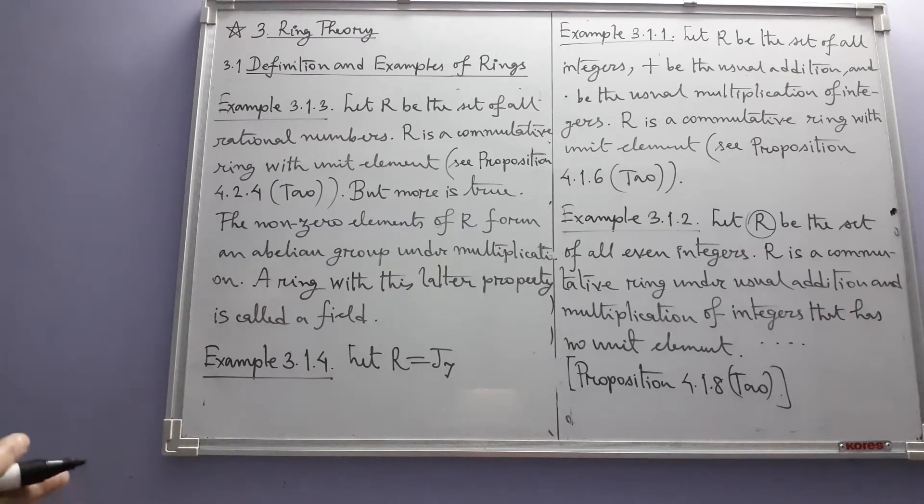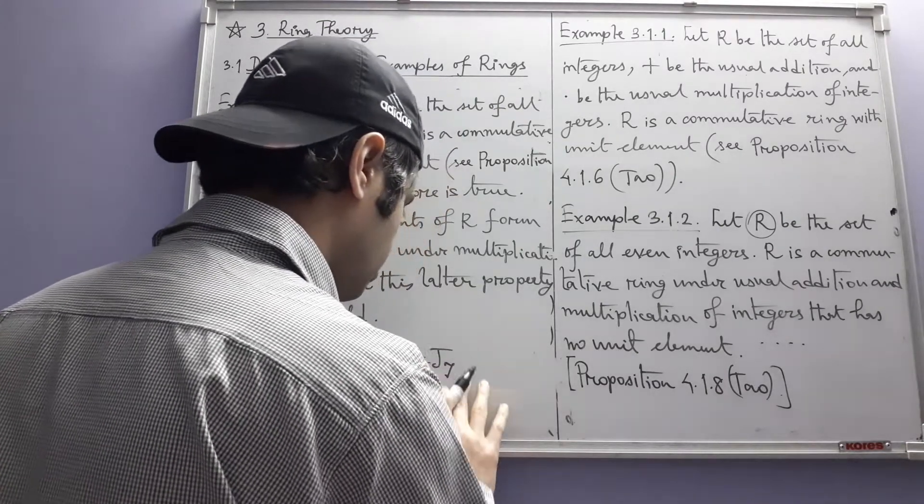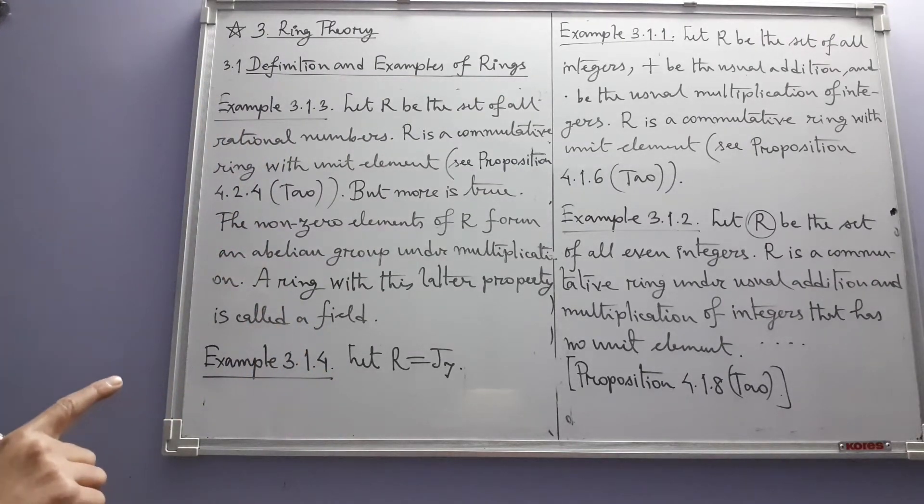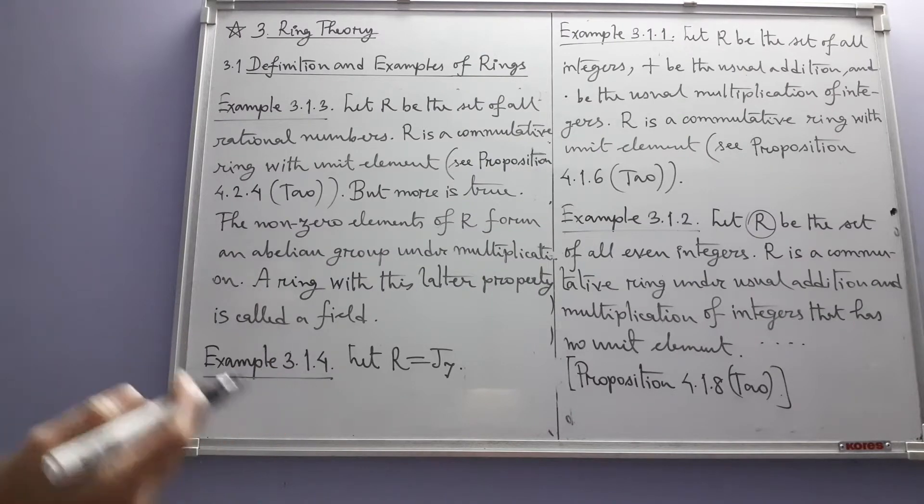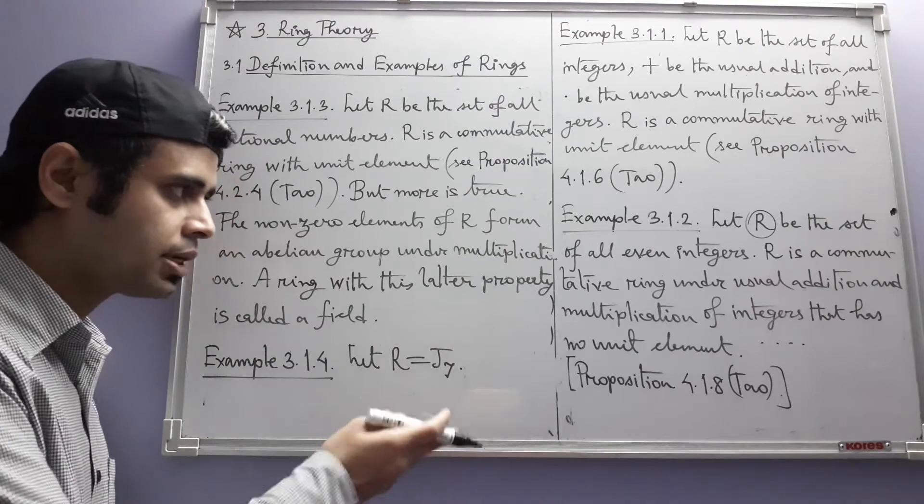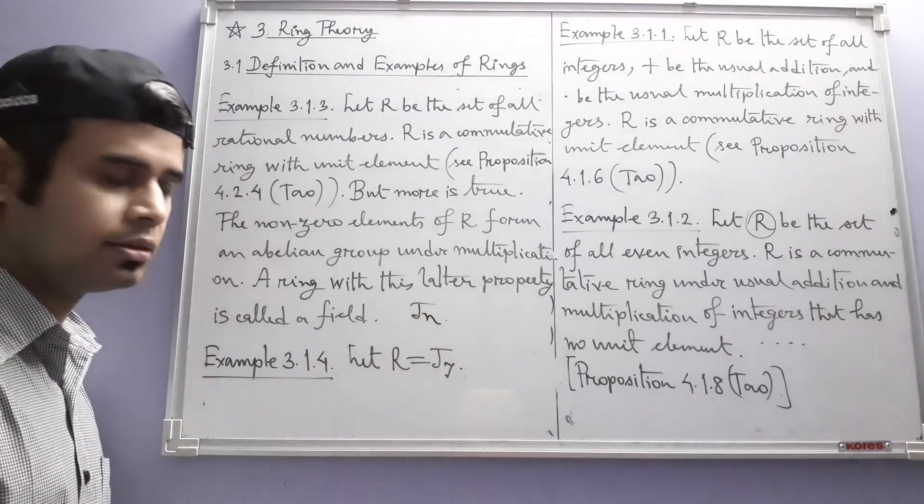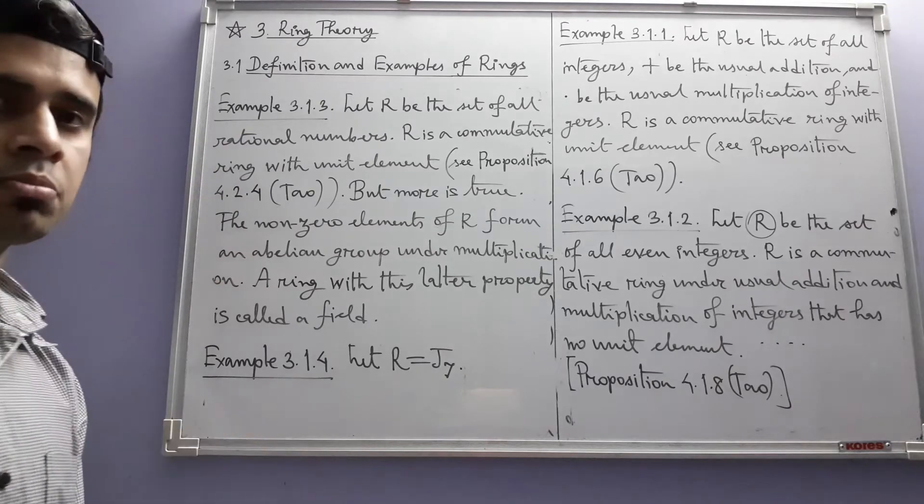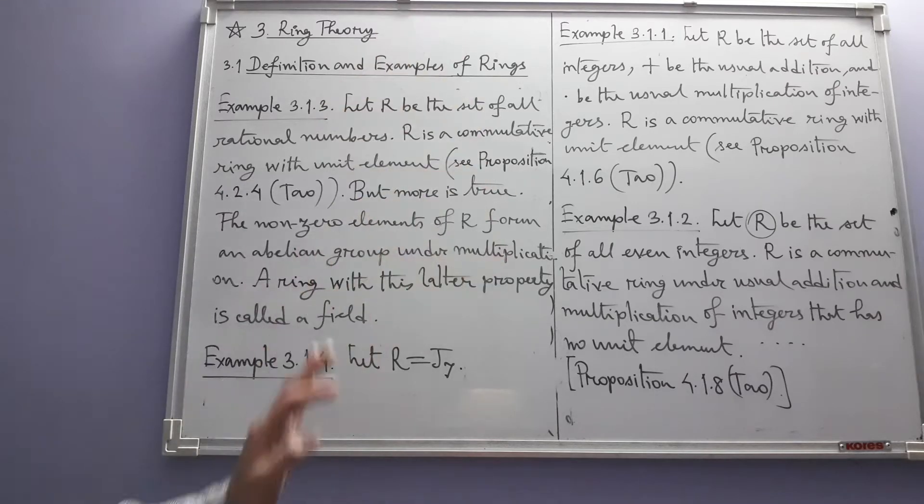Congruence classes modulo 7, there are seven such congruence classes. And this also is a ring with respect to addition modulo 7 as addition and multiplication modulo 7 as multiplication. So these are the two operations. You can recall we have already seen in defining Jn, and one exercise asks us to prove some properties of those operations. Those properties include the ring properties.